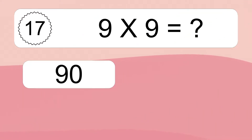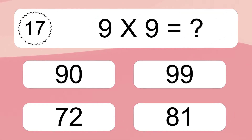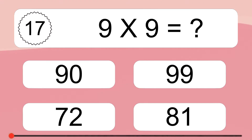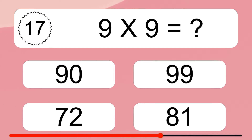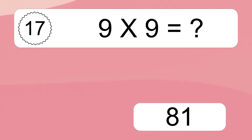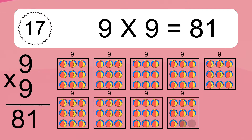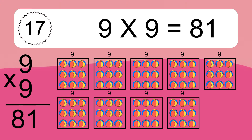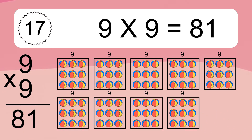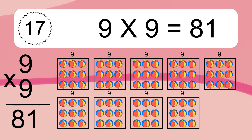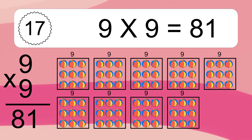9 times 9 equals what? 9 times 9 equals 81. We have 9 boxes, and each box has 9 colorful balls inside. If you count all the balls in all the boxes together, you will have 9 times 9 balls. This equals 81 balls.